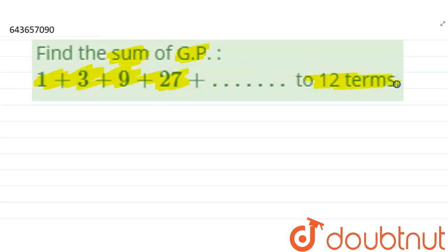So here the number of terms is 12. We know that the formula of sum of n terms of GP is S equal to a times r to the power n minus 1 divided by r minus 1.